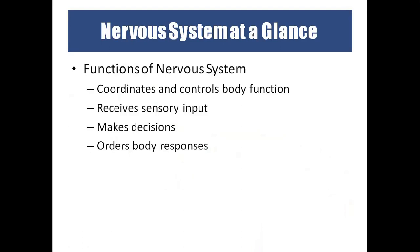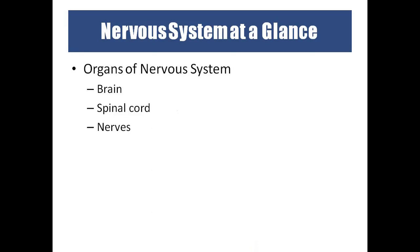The main function of the nervous system is coordination — each and every system works together. The digestive system works with the cardiovascular system, which works with the respiratory system, and everything is coordinated by the nervous system. It also controls the body. Without the nervous system our body would be in off mode. We receive information through sensory input — receptors for vision, hearing, taste, smell, touch, temperature, pressure, and pain — and our brain makes decisions and the body reacts accordingly.